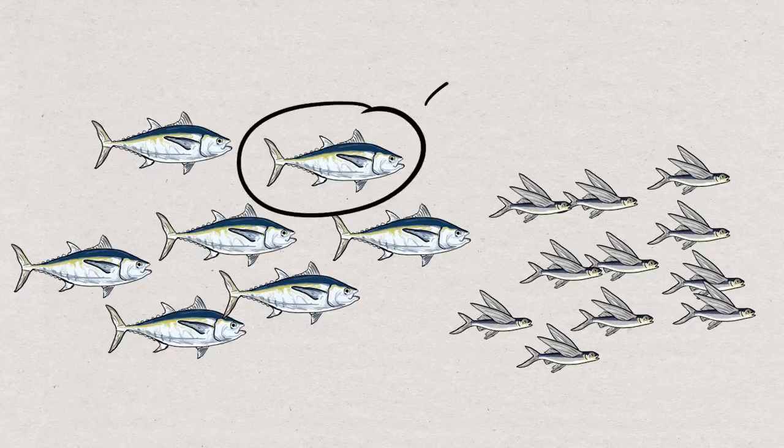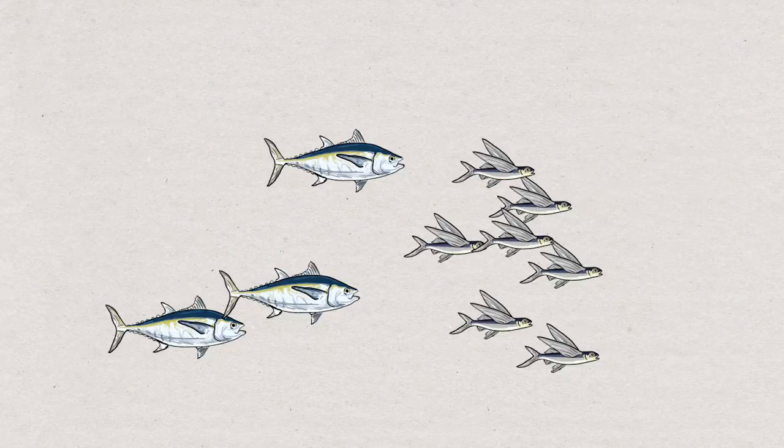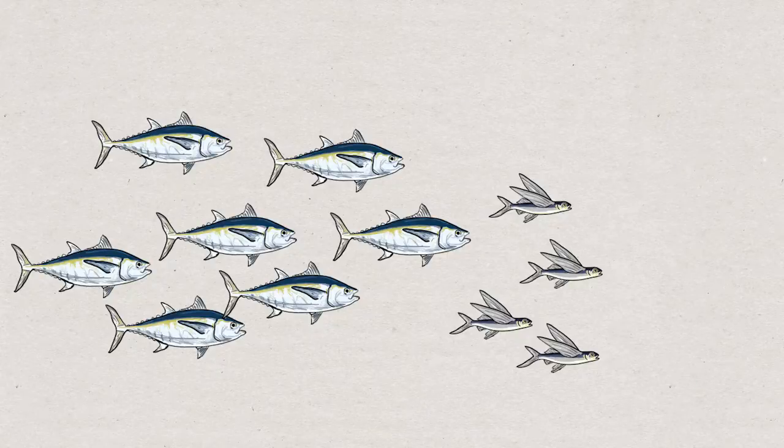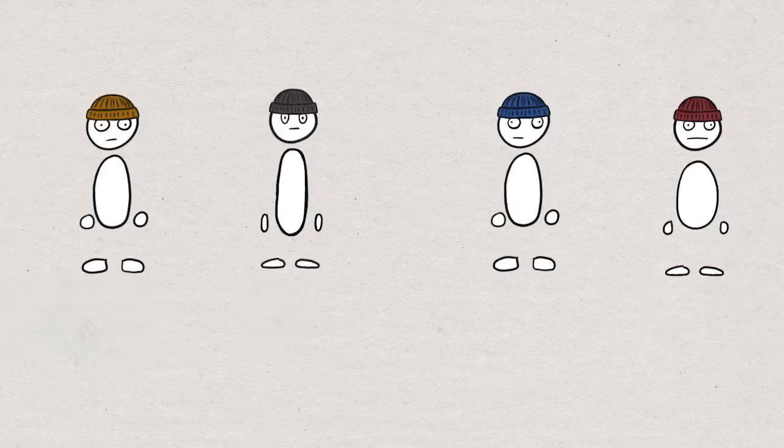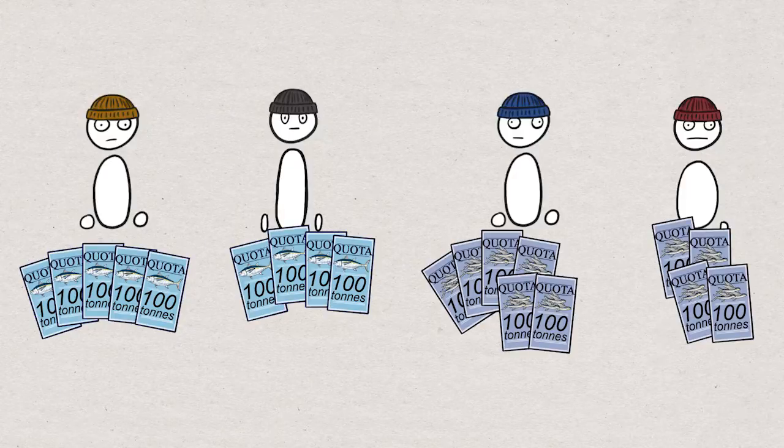Like if this species eats this species, then if this one is fished more it means there will be an increase in catches for this other one. Or if this species is fished more, it means there will be less of this other one. With a single species individual transferable quota, the fishermen aren't really in a position to work this into their plans.